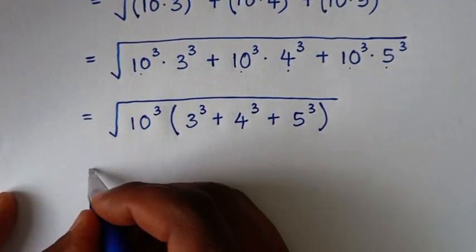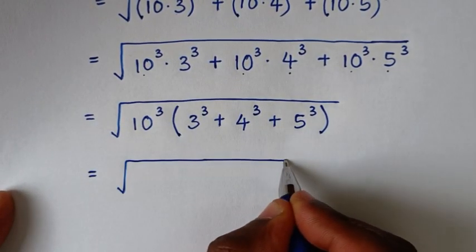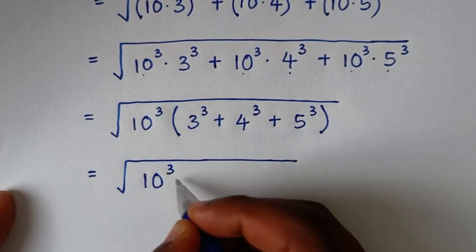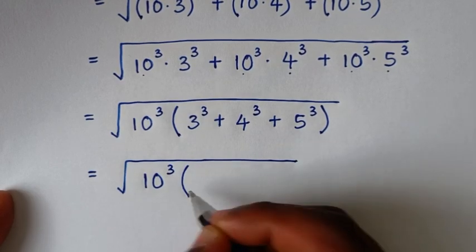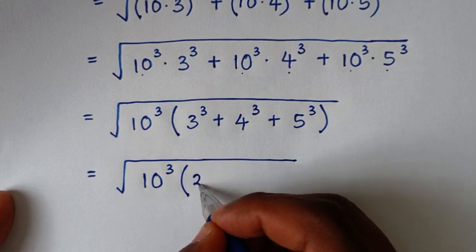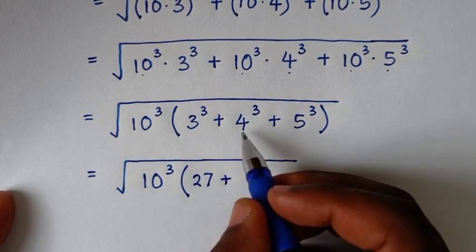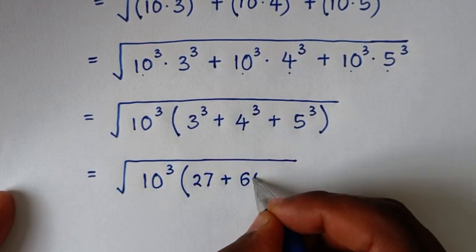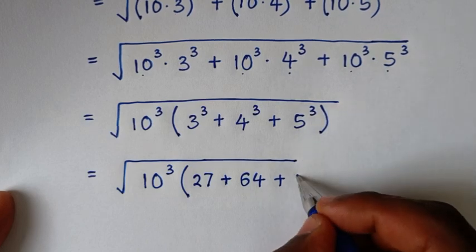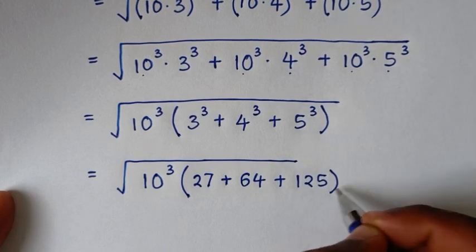Then in the next step, it will be equal to the square root of 10³, bracket: 3³ is 27, plus 4³ is 64, plus 5³ is 125, bracket.